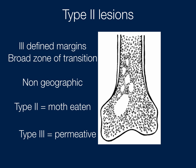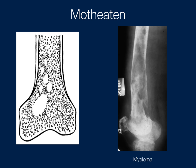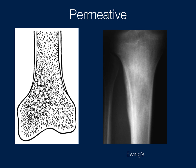The final category is the permeative — the most aggressive. It's an ill-defined lesion where it's hard to see where the tumor begins and ends, with a very wide zone of transition. An example of the moth-eaten appearance is multiple myeloma, and a permeative lesion example is Ewing's sarcoma — very ill-defined and aggressive.